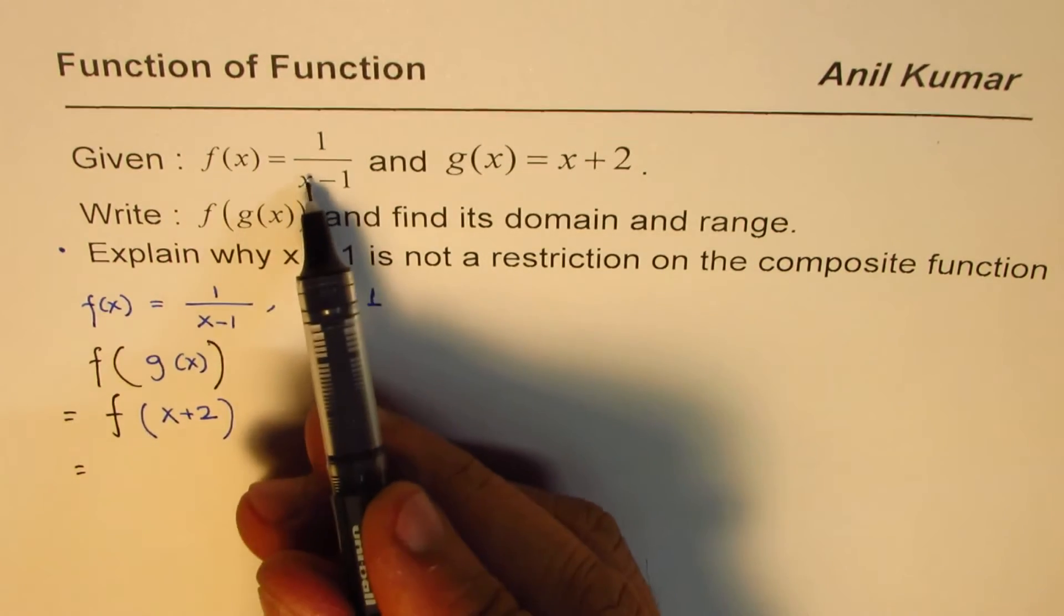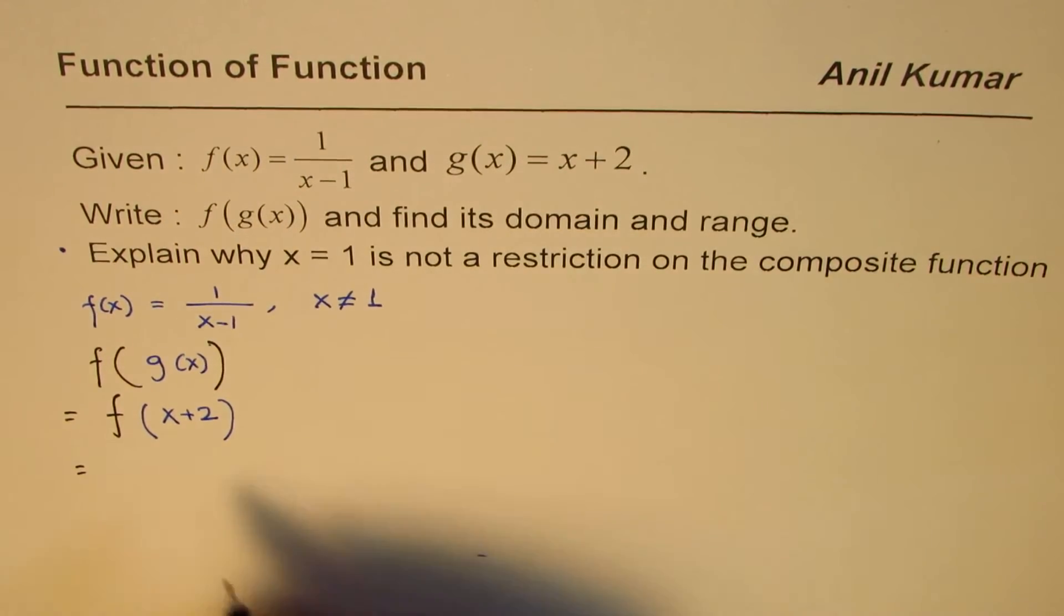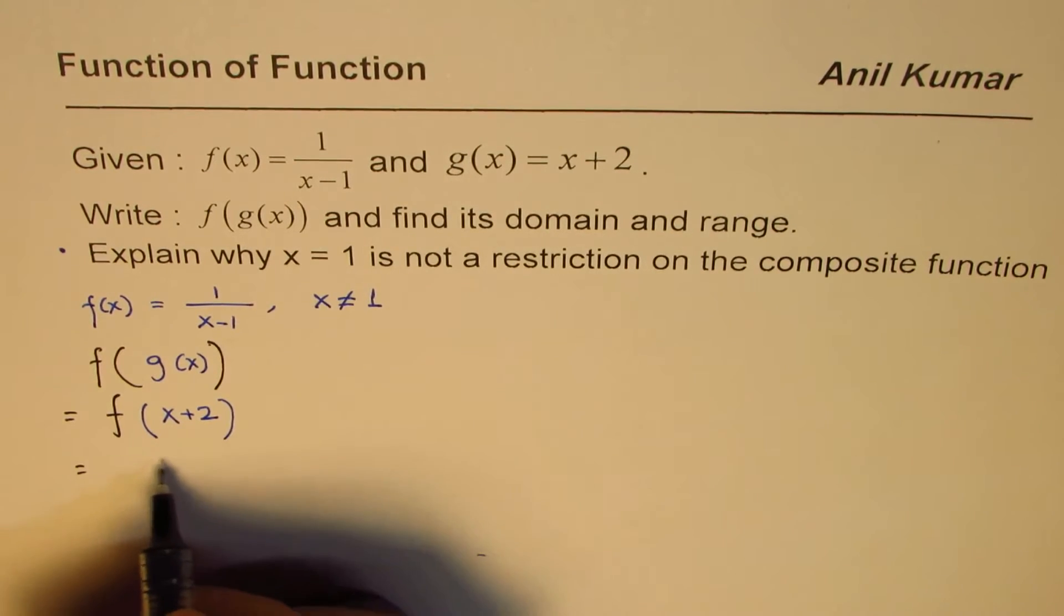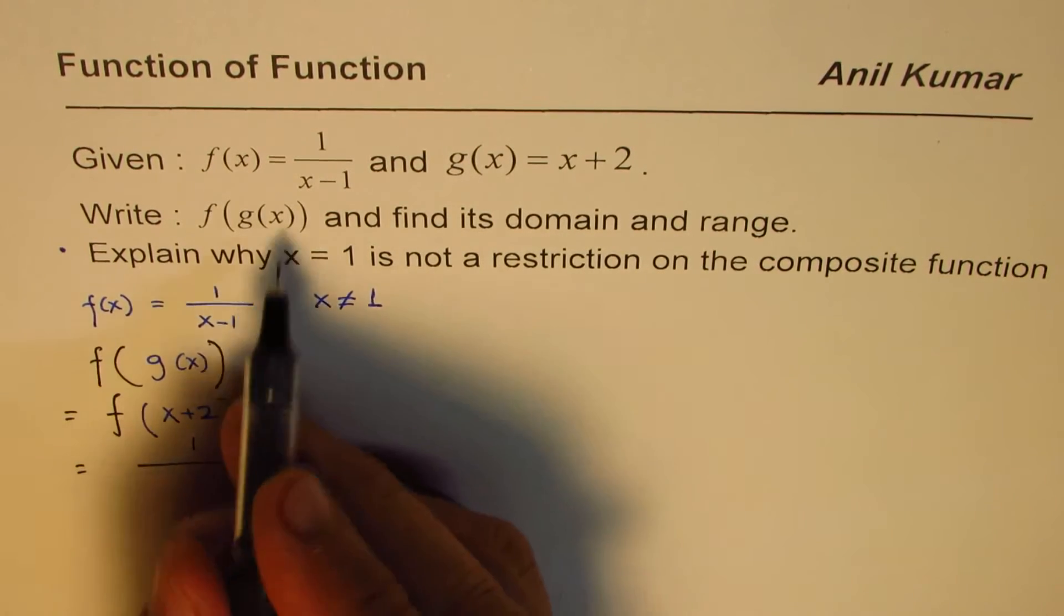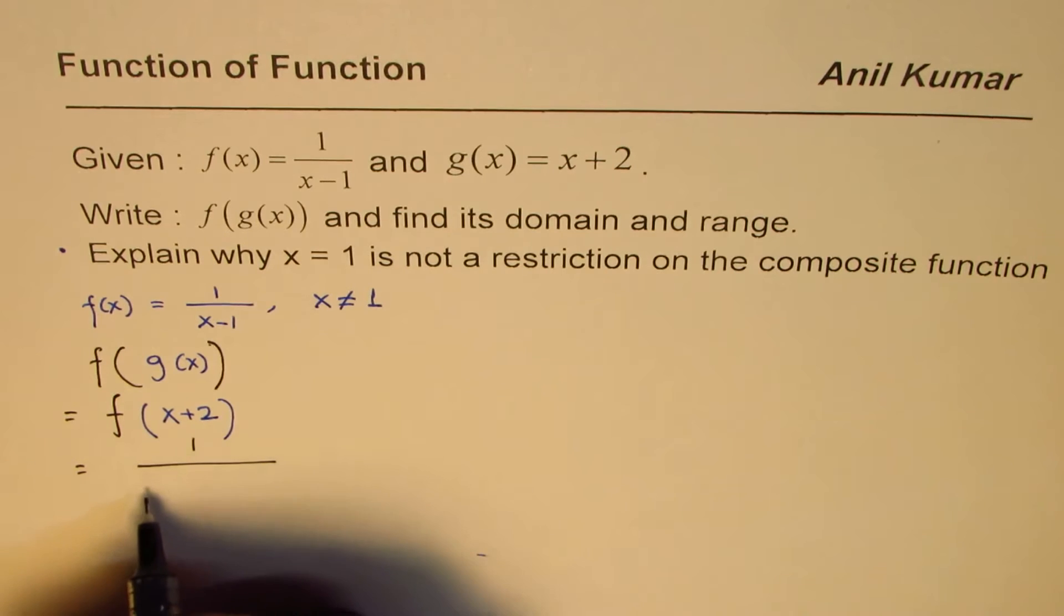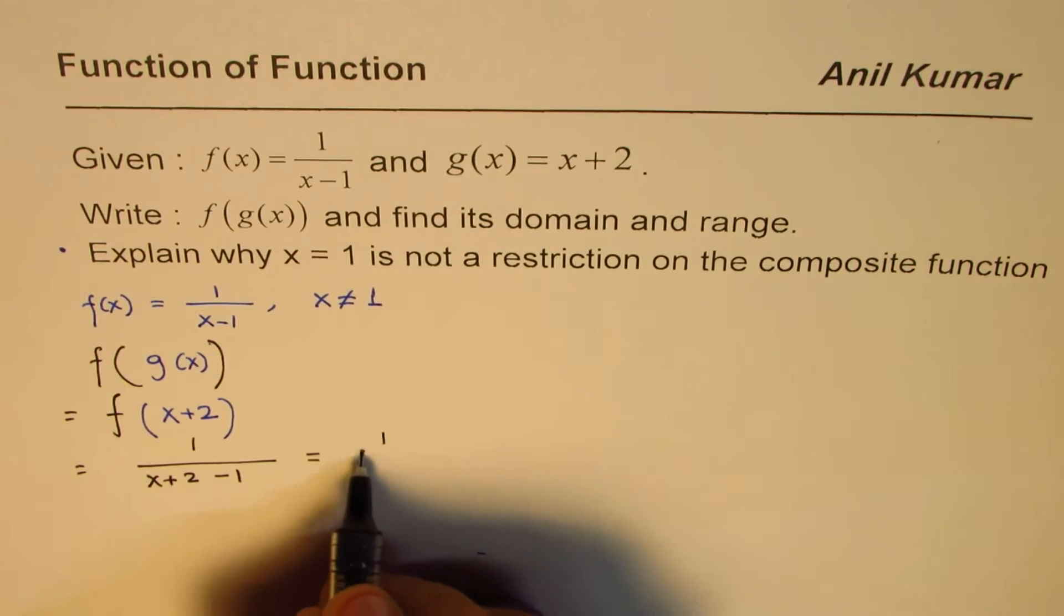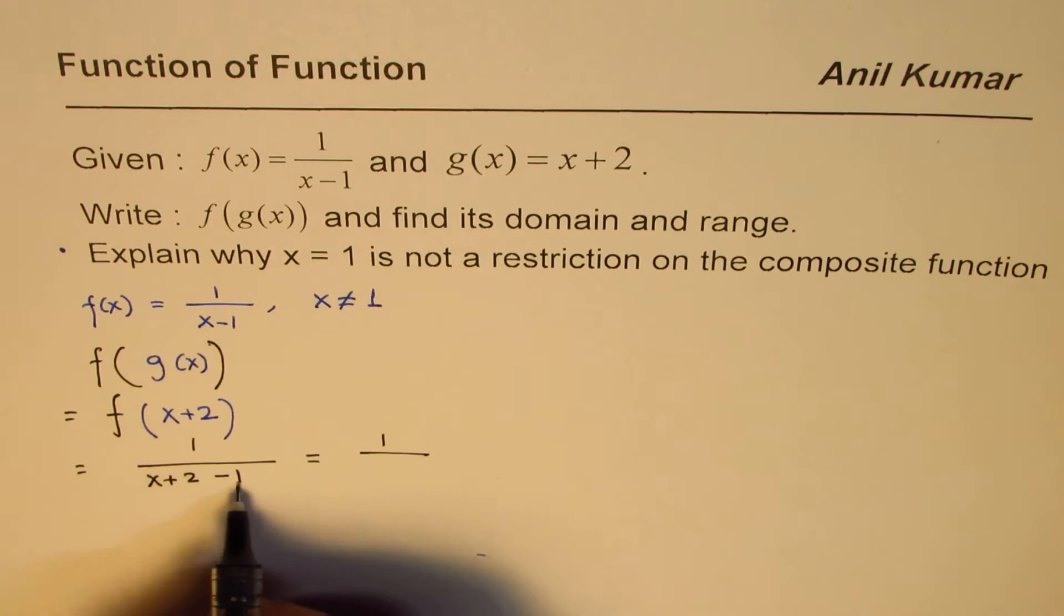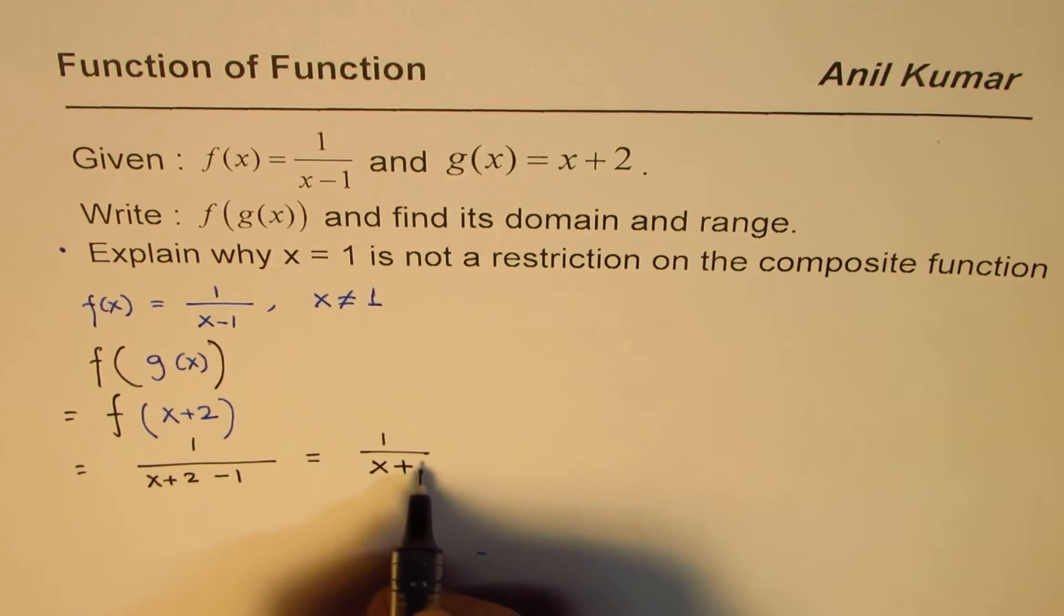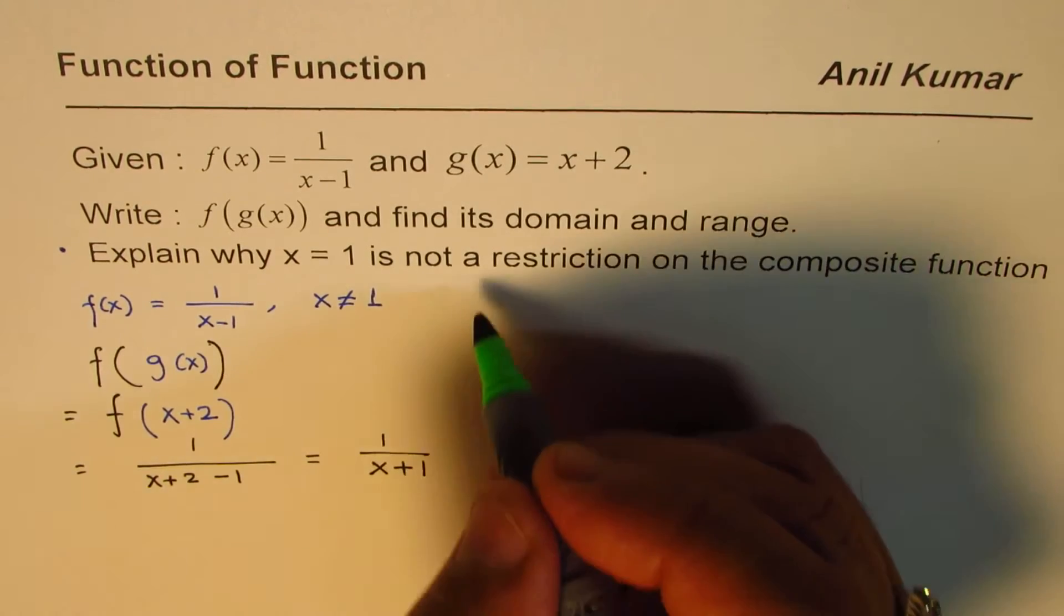What we get here is 1 over - I'm replacing this x with x+2 - so we get (x+2) minus 1. That gives us 1 over (2 minus 1 is 1), so 1/(x+1). Do you see that?